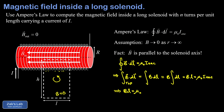On the right-hand side we need μ₀ times the enclosed current. The loop captures several wire segments each carrying current I. The number of turns enclosed equals the linear turn density n (in turns per meter) multiplied by the length l, giving n·l turns. Each carries current I, so the total enclosed current is n·l·I. Substituting into Ampere's law gives B·l = μ₀·n·l·I.